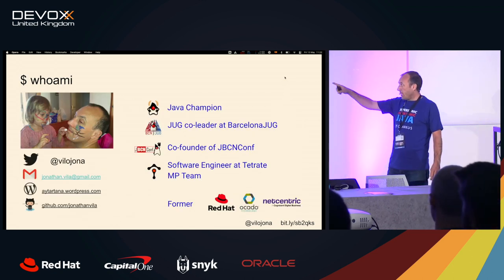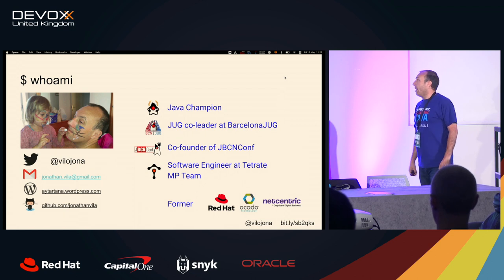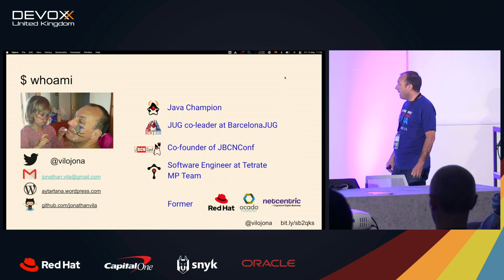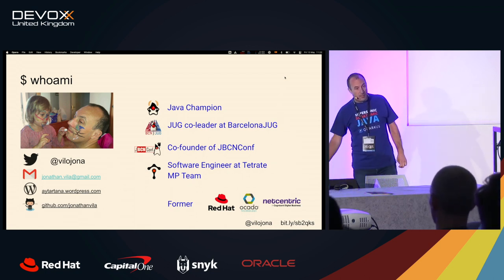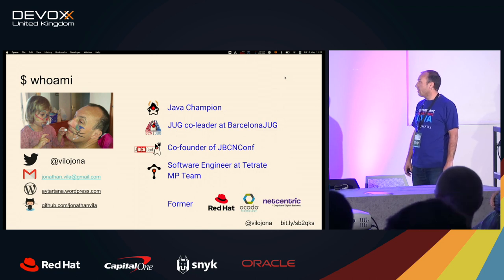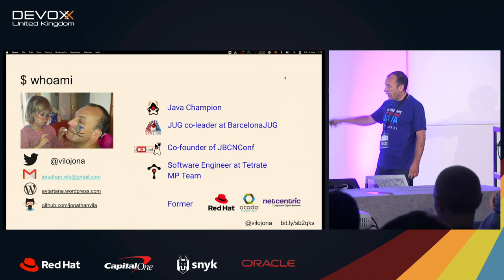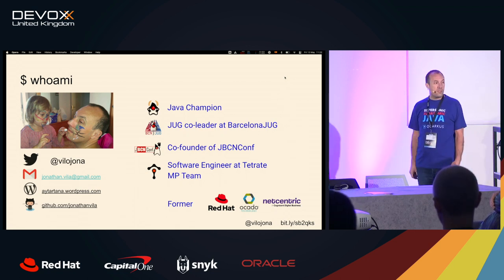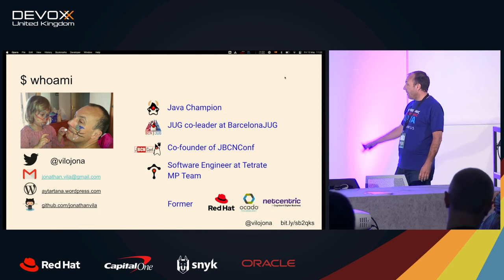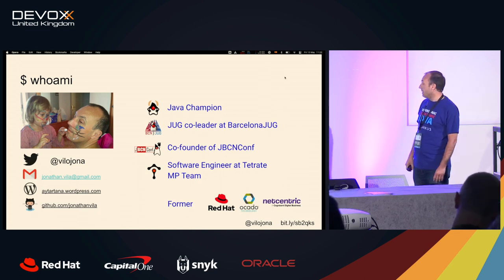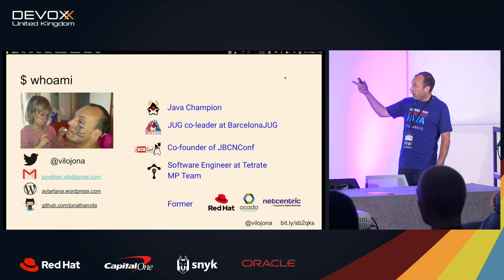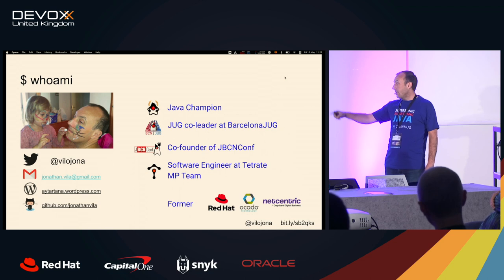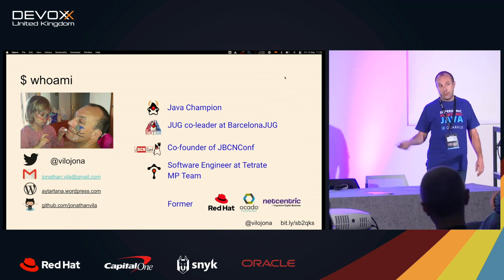Basically, I'm that guy being painted. I'm a Java Champion, also co-leader at the Barcelona Java User Group, co-founder of the conference JBC and Conf that we host every year in Barcelona. Currently, I'm a software engineer at Tetrade, a small company in the US, doing things about Service Mesh and Istio. But I've been part of Red Hat, Ocado, and Netcentric. You can find me on Twitter, my email, my blog, and also check my repositories at GitHub.